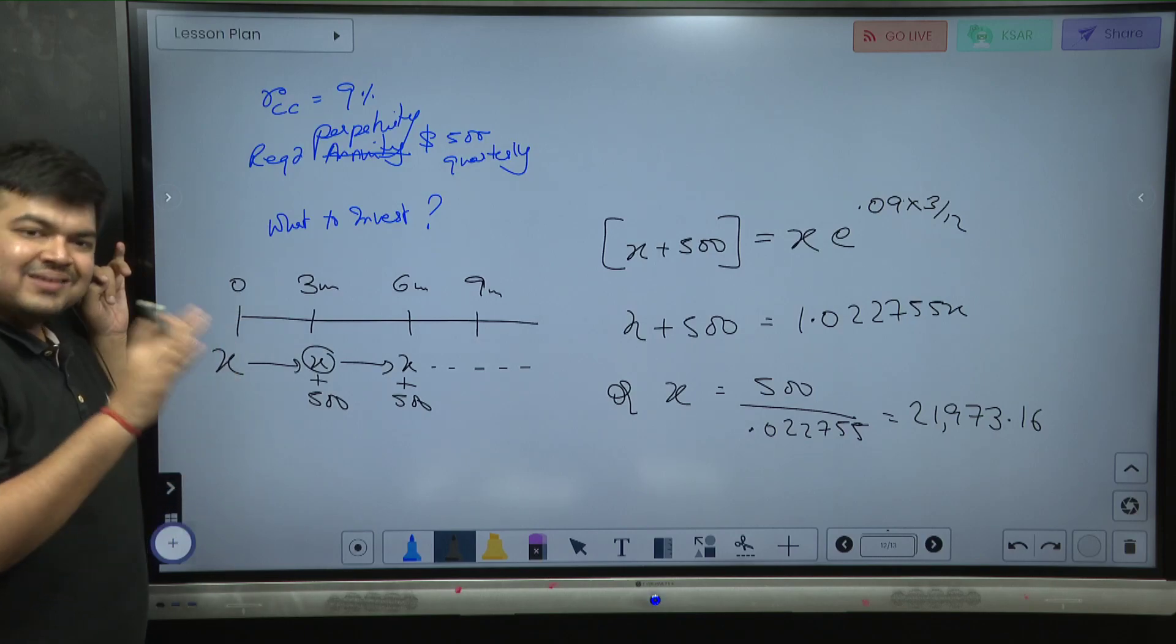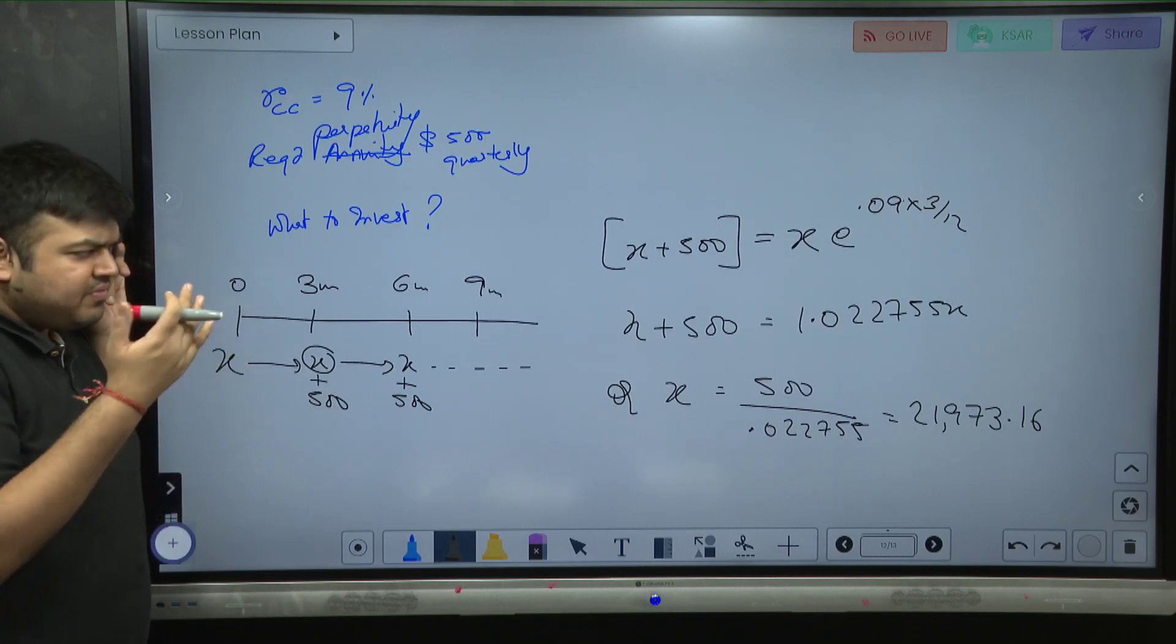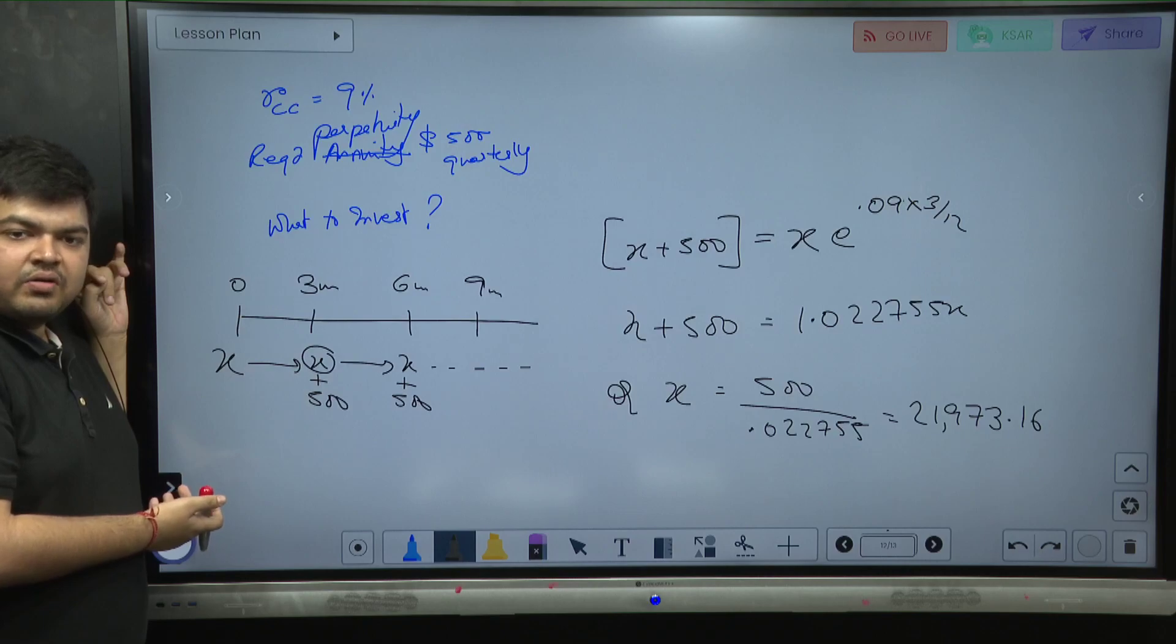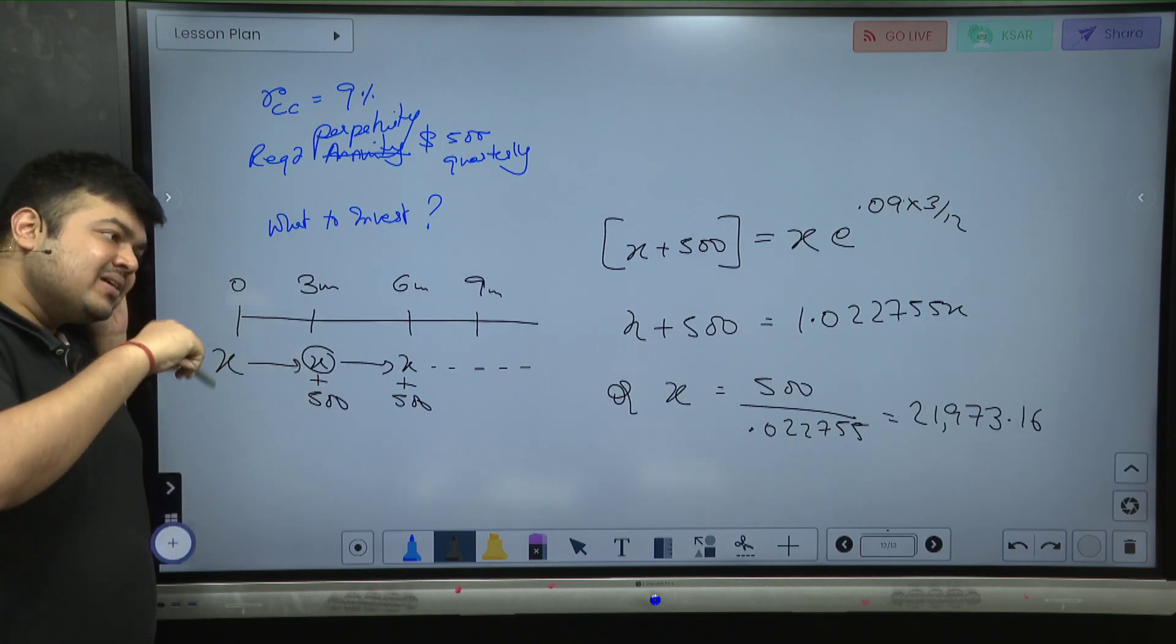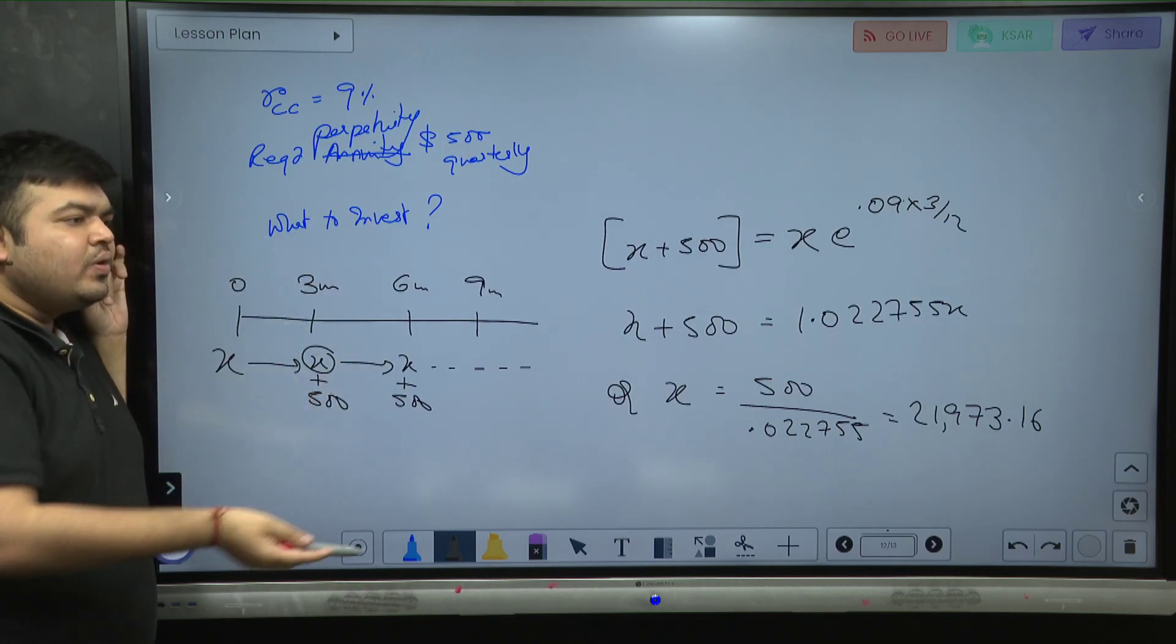If I am investing an amount x, x is what we need to find out. If I am investing x, that needs to become x plus 500 because I am going to take out 500. So x again gets reinvested at the same rate, it is again going to become x plus 500.